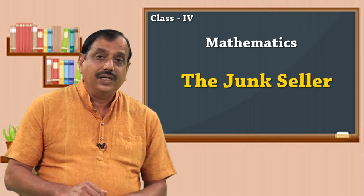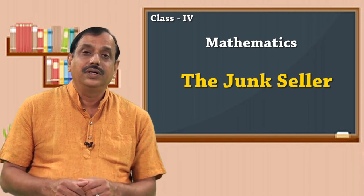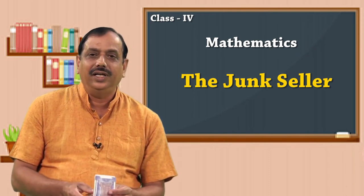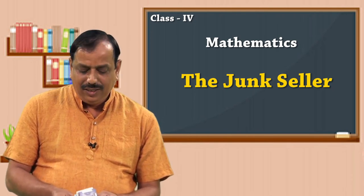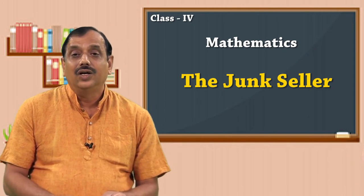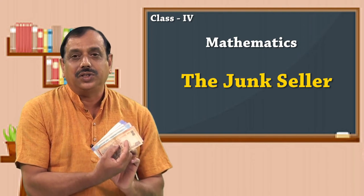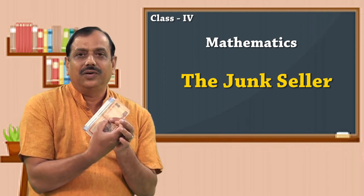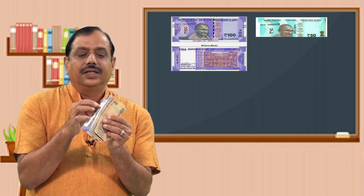When Kiran sells the junk to Dinu, Dinu also makes payment to Kiran. The money payment is done through currencies. Imagine Dinu gives Kiran a certain amount of money for buying her junk. The notes received include 100 rupees, 50 rupees, 20 rupees, and 10 rupees. Usually when you sell or buy anything, it is done through money transactions only, and these are known as currencies.